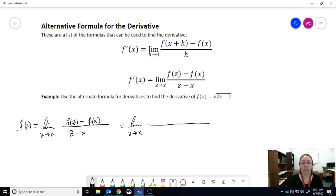So f of z, that's the square root of 2z minus 1 minus the square root of 2x minus 1 all over z minus x.